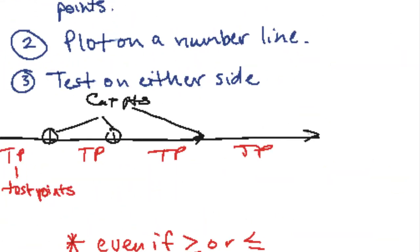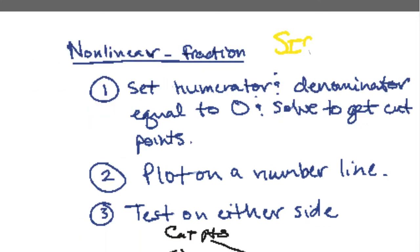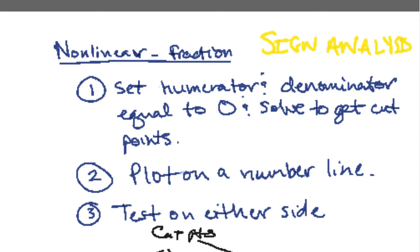So then the last type we're going to look at, it's also a sign analysis type problem in which you have to do that number line, is when you have a fraction and inequality.